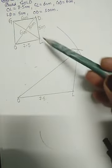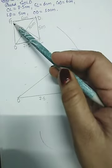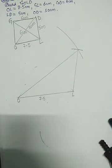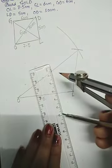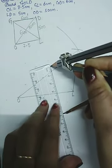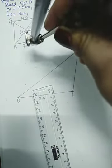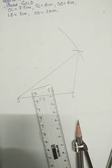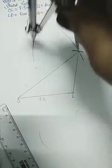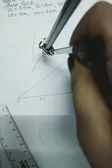Now what we have to do, I have taken this five. Now from this D I'll cut an arc length of six centimeter and from L we have to cut an arc length of six centimeters.